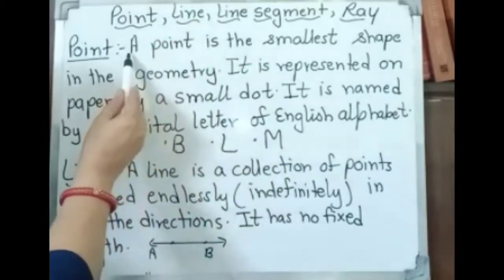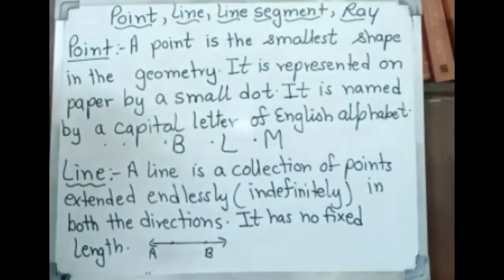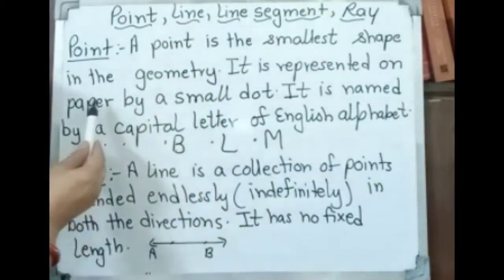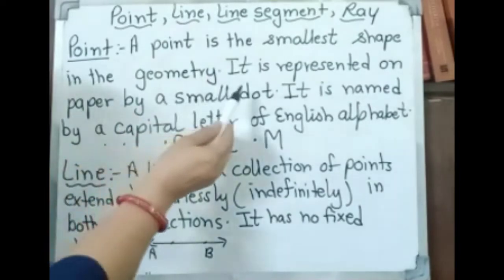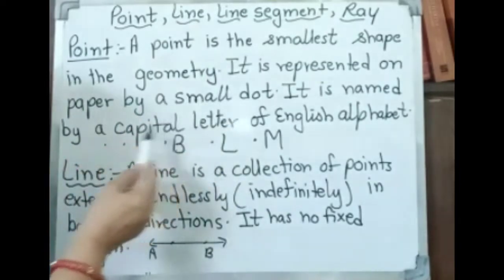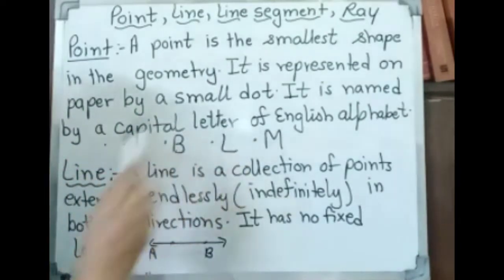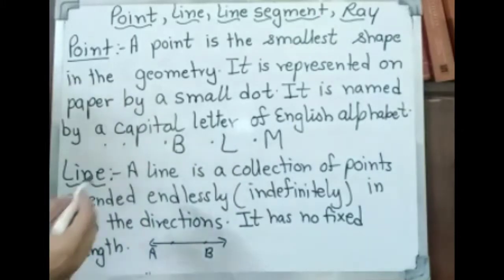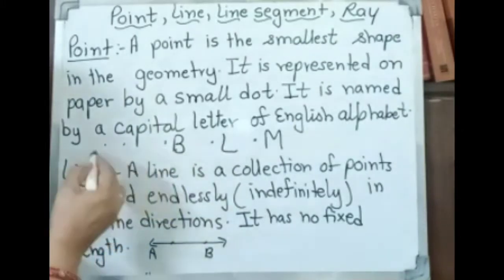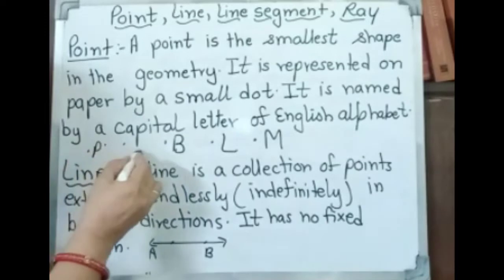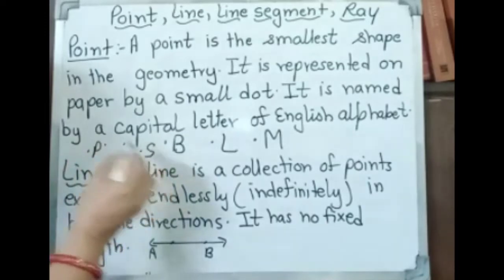Again: a point is the smallest shape in geometry. It is represented on paper by a small dot. It is named by a capital letter of the English alphabet. Always take care of that — you have to use a capital letter. For example, point P, point S, like that.